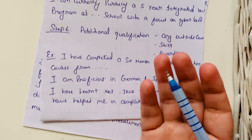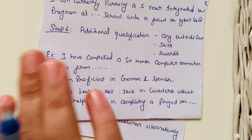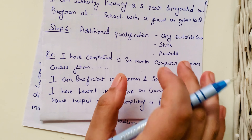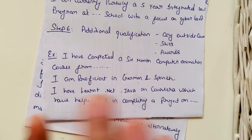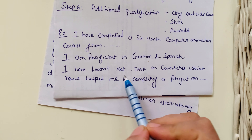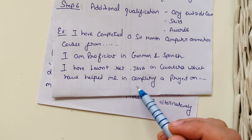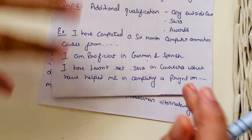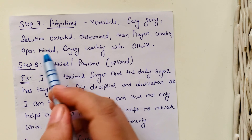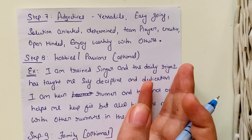Step number six is additional qualifications. This may include outside courses, skills gained, or awards. For example: 'I have completed a six-month computer animation course,' 'I am proficient in German and Spanish,' or 'I have learned .NET and Java on Coursera, which helped me complete a project on so-and-so.'